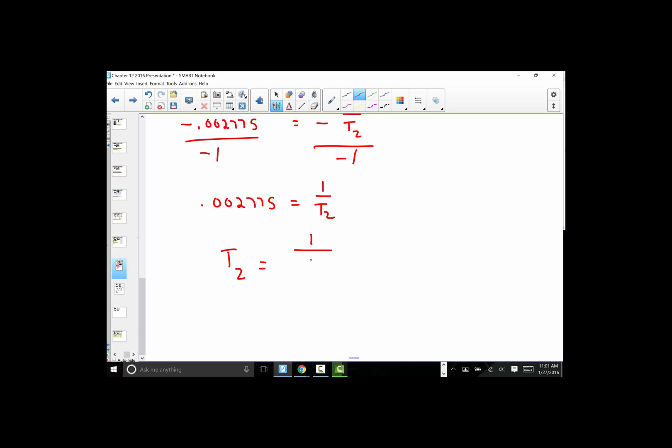And the algebra here now, T2 can be found by taking 1 over 0.002775. So T2 is 1 divided by 0.002775. 1 divided by previous answer on my calculator screen, and the Kelvin temperature is 360.32 Kelvin units.